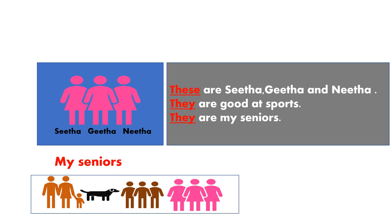Now he is talking about three girls: the first girl Sita, second girl Gita, third girl Neeta. Vivek is saying: they are my seniors. These are Sita, Gita and Neeta. They are good at sports. They are my seniors. The word 'these' refers to the three girls. 'They' also refers to the three girls — Sita, Gita and Neeta are replaced by the word 'they'. This is a pronoun.